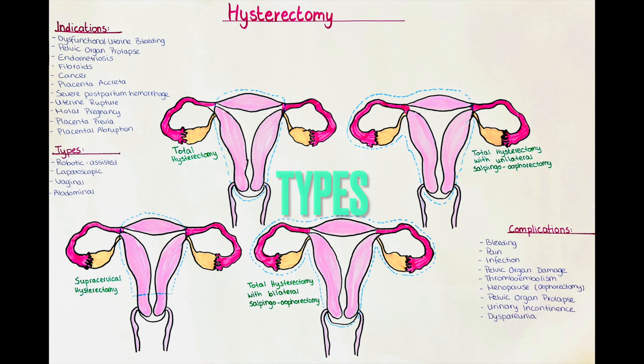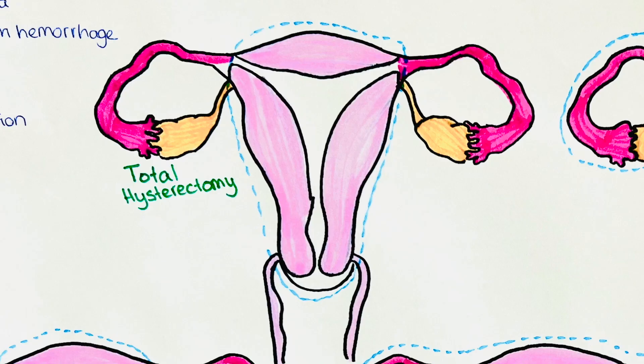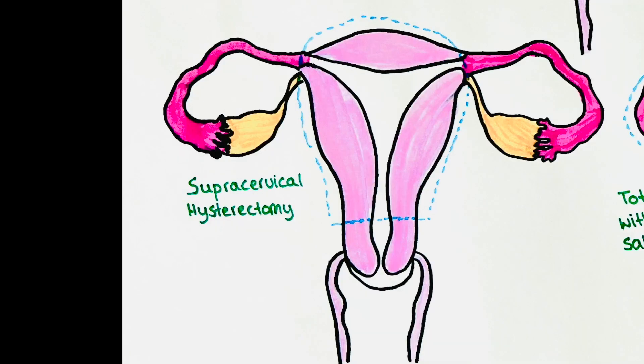What are the types of hysterectomy? There is the total hysterectomy, which is the most common type. It involves removing the entire uterus and the cervix; the fallopian tubes and ovaries are not removed. The supracervical hysterectomy involves removing the upper part of the uterus but the cervix is left in place, and the fallopian tubes and ovaries are not removed.